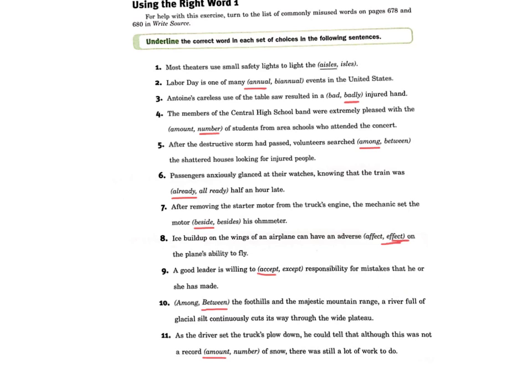For number six, it was previously, meaning it occurred earlier than the present, so it's already a half hour late. For number seven, we want to say beside. Whenever we need a noun in number eight, we go with effect. To receive is accept with an A. For number ten, between the foothills and the mountain range — even though there are probably more than one foothill, those are two different things, so we go with between.